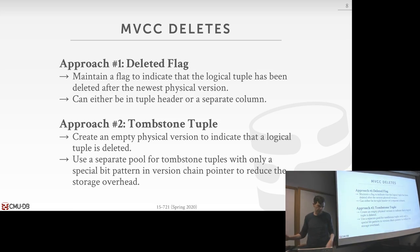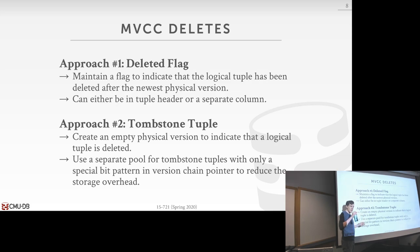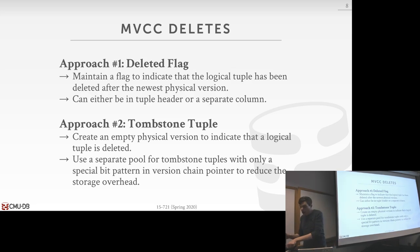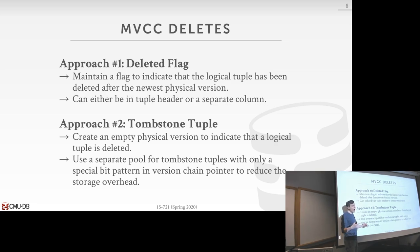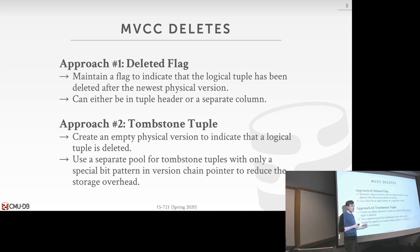Why do we need a separate tombstone tuple for each deleted tuple? Because in the tombstone you're recording the begin and end timestamps — you need to know when the thing was deleted. And a shared tombstone table can be used across multiple tables because we're not storing any attributes in the tombstone. The tombstone just says 'you're dead at this time,' so it doesn't matter which table it corresponds to.